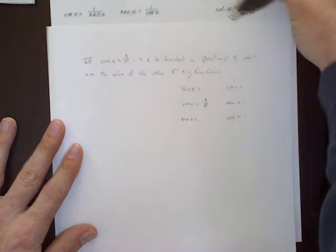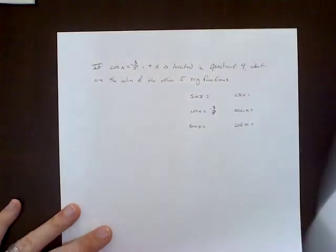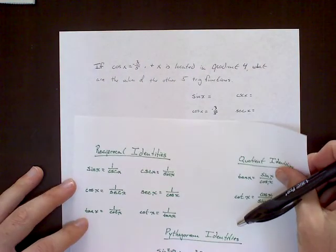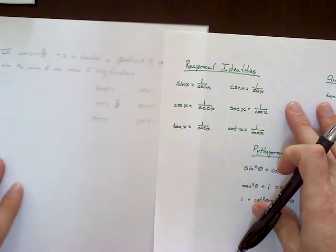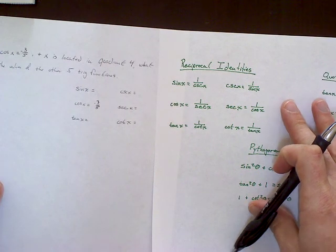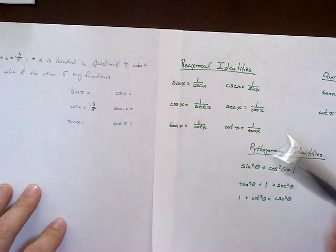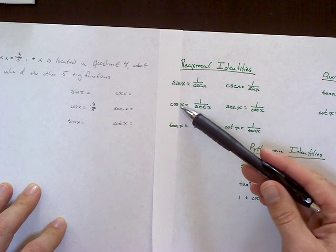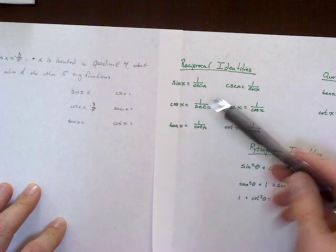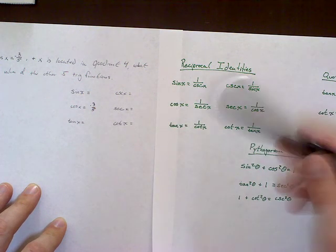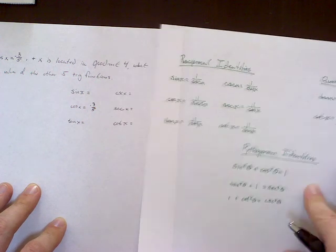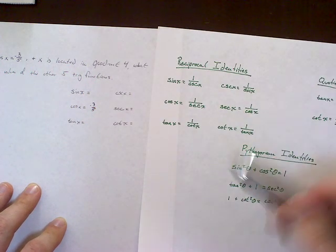Now, what we're going to want to do here is take a look at these trig identities. So I'm going to slide this over here so we can kind of get a look. Now, because cosine is equal to 3 over 5, what we can deduce then is that, so to figure out what secant is, we can then use some of these other identities here.